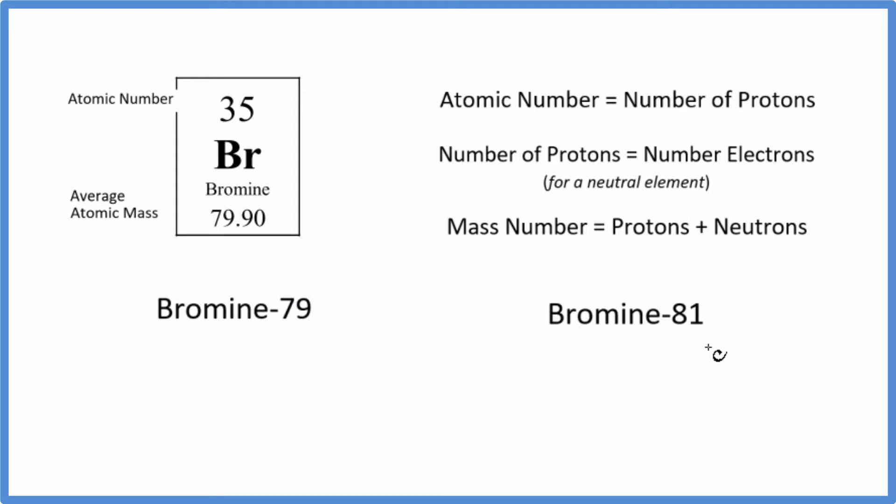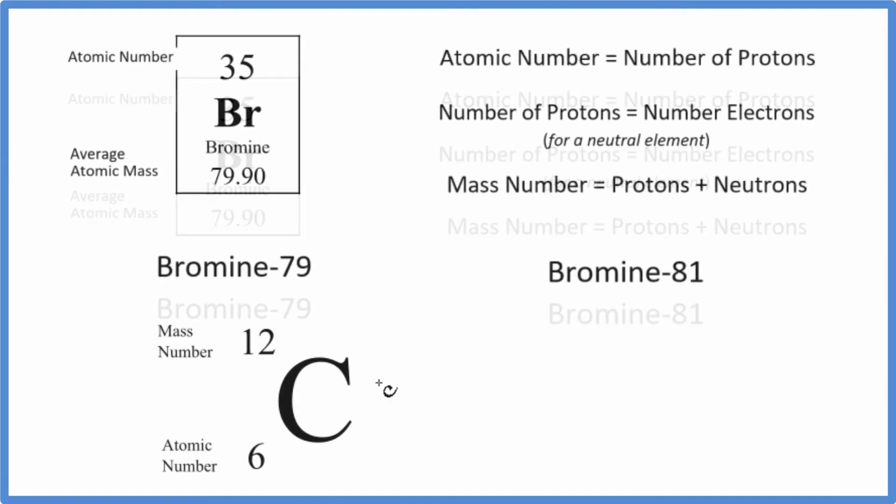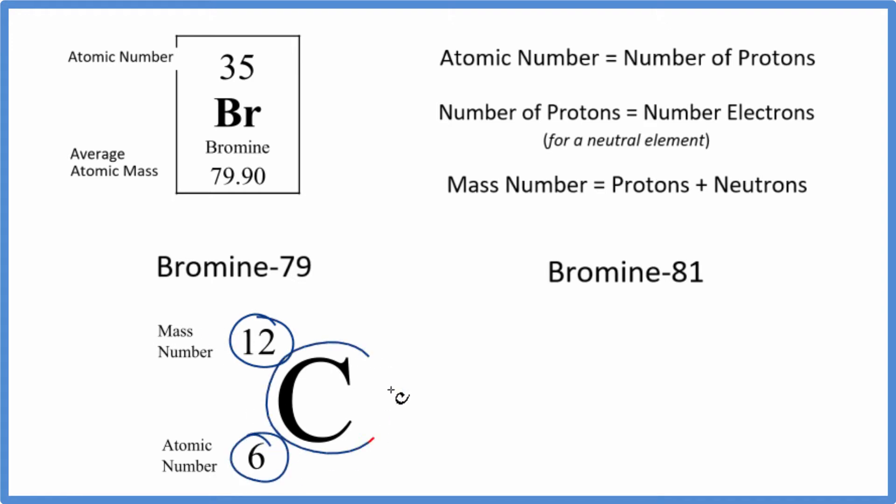We have hyphen notation. Let's write the isotope notation, the nuclear notation. That follows this general pattern here. For example, with carbon, this would be the mass number here, and then we'd have the atomic number here, and this would be our element symbol.